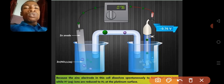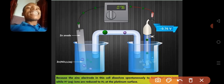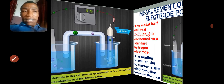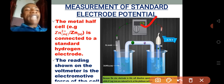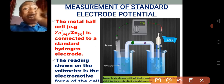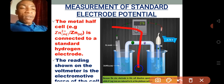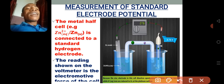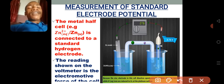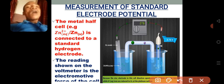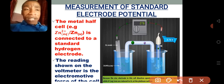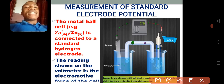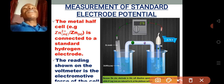Electrode potential values always have signs — either positive or negative. The magnitude of the electrode potential is whatever is read on the voltmeter, since hydrogen is zero volts. How do you know whether the sign will be negative or positive? It depends on the direction of the flow of electrons.